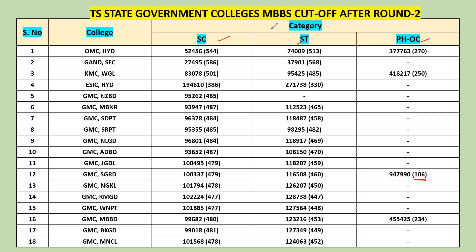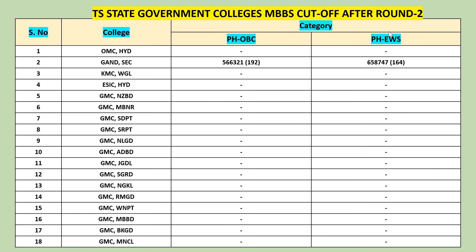If you are in a particular category, choose your students accordingly. Also, PH, OBC-PH — if you are interested, in the seat matrix we will have the data. I am on the MCC.NIC.IN website, Phase 2 Allotment List, to check the professional allotment list for students.